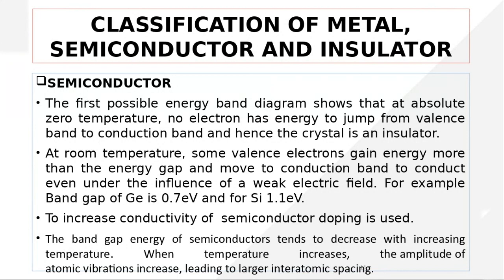Those doped semiconductors are called extrinsic semiconductors. When you increase the temperature of a semiconductor, resistivity changes — resistivity decreases with increasing temperature, so conductivity increases. In terms of the energy band, when temperature increases and conductivity increases for semiconductors, we say there is a decrease in the band gap. So the important concept is: with increasing temperature, the band gap of semiconductors decreases.